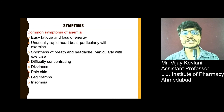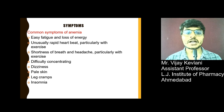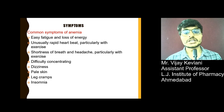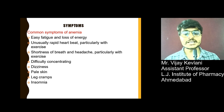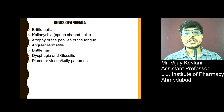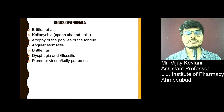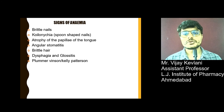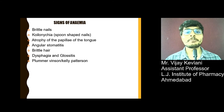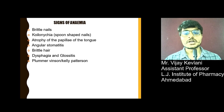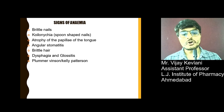Signs and symptoms of anemia include easy fatigue and loss of energy, unusually rapid heart rate particularly with exercise, shortness of breath and headache particularly with exercise, difficulty in concentrating, dizziness, pale skin, leg cramps, and insomnia. Additional signs include brittle nails, koilonychia — that is spoon-shaped nails — atrophy of papillae of the tongue, angular stomatitis, brittle hair, dysphagia, glossitis, and Plummer-Vinson or Kelly patterns.